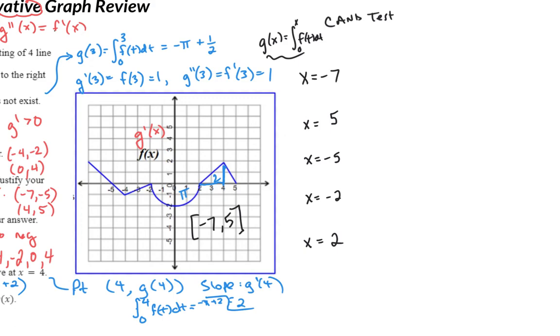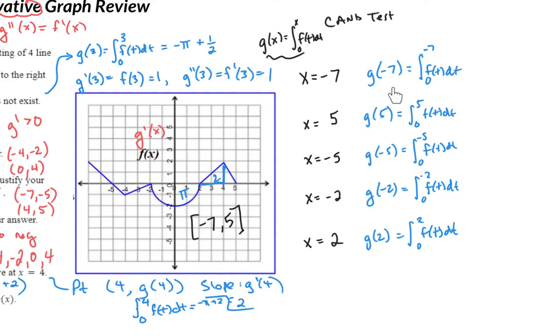I know it's not my answer. I know that negative 2 is not going to be the absolute max or min, but I'm going to just check it. What I mean by checking it is we are actually going to find the value of the function at each of these spots. So we're going to find what is g of negative 7, and what is g of 5, what is g of negative 5, g of negative 2 and g of 2, which of course means we're really just doing the integral from 0 to negative 7. Let me fill in the rest. So you can see I've just listed all of those integrals.